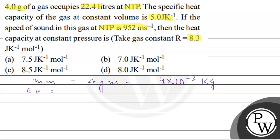Speed of sound is equal to 952 meters per second at NTP. NTP temperature is 293 Kelvin. Then the heat capacity at constant pressure we find Cp, and the gas constant value given R is equal to 8.3 Joules per Kelvin per mole.